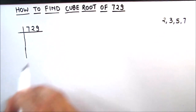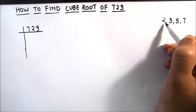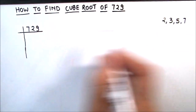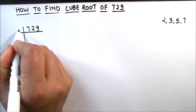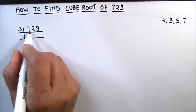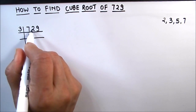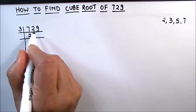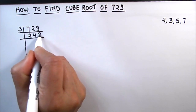Let's divide 729 by 3. As it is an odd number, it is not divisible by 2, so we will take 3 to divide 729. 3 times 2 is 6, 1 is carried over, this becomes 12, 3 times 4 is 12, and 3 times 3 is 9.